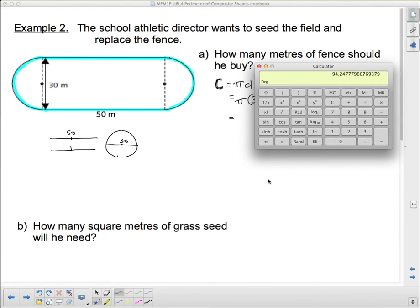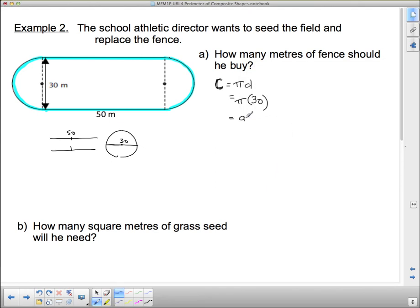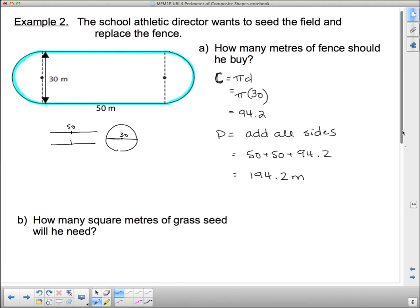So 30 times pi, 94.2, and then I have to add in the two 50s or 100. So perimeter is going to equal add all sides, which is 50 plus 50 plus 94.2, which equals 194.2. And this is going to be in meters. So they need 194.2 meters of fence.